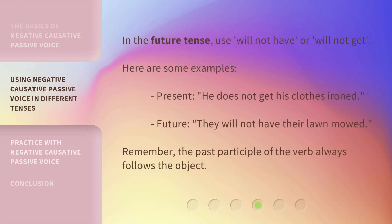In the future tense, use 'will not have' or 'will not get.' Here are some examples. Present: 'He does not get his clothes ironed.' Future: 'They will not have their lawn mowed.' Remember, the past participle of the verb always follows the object.